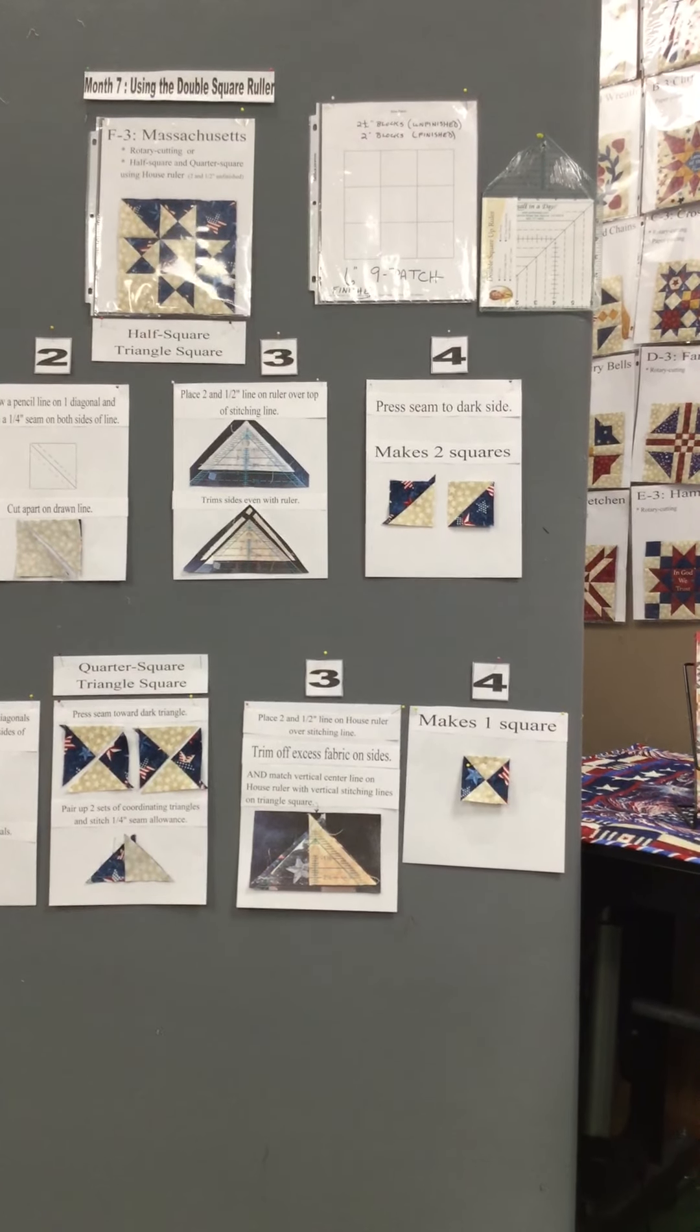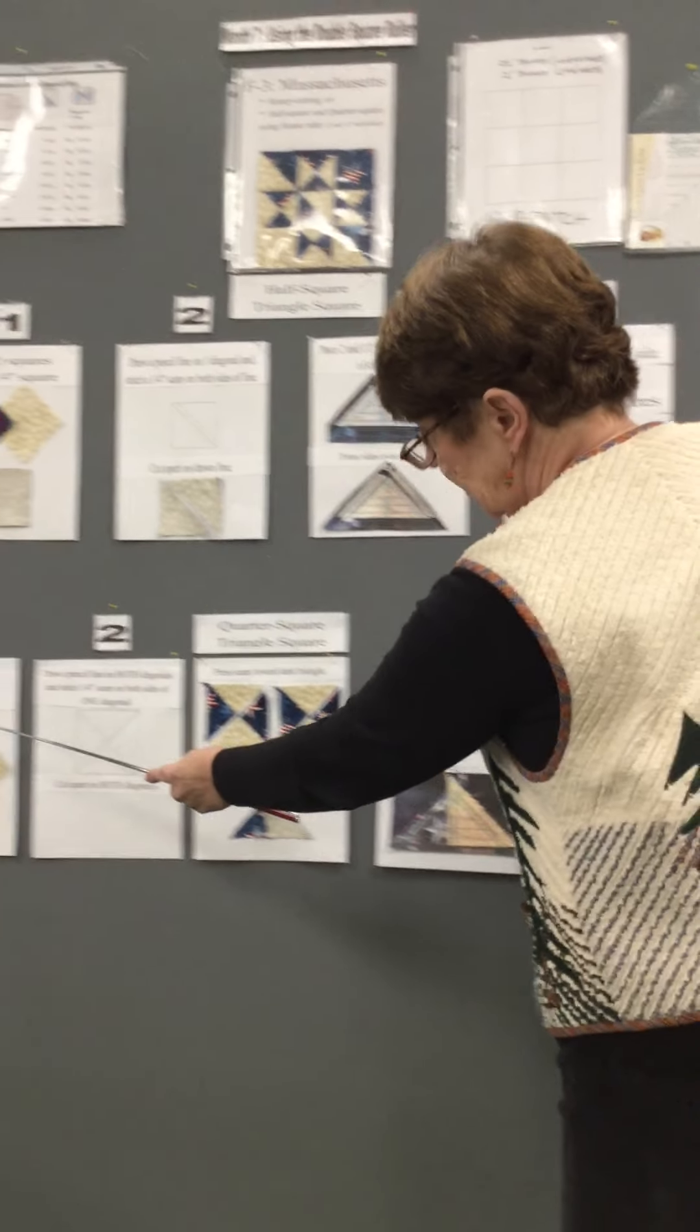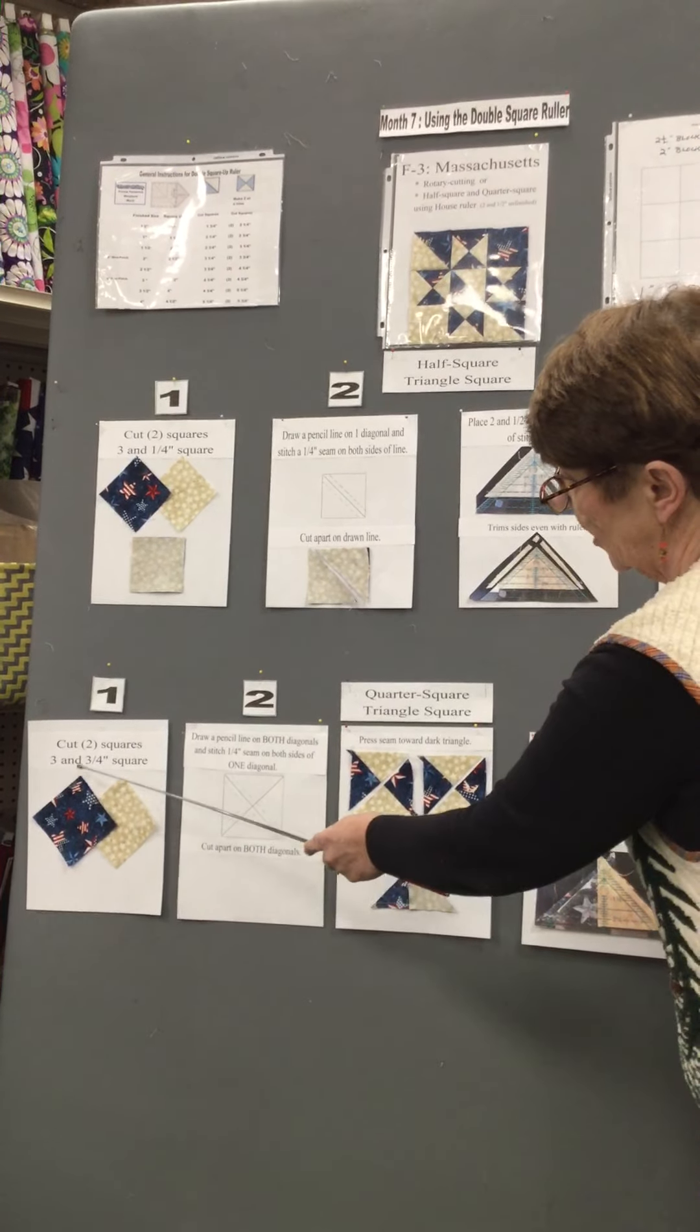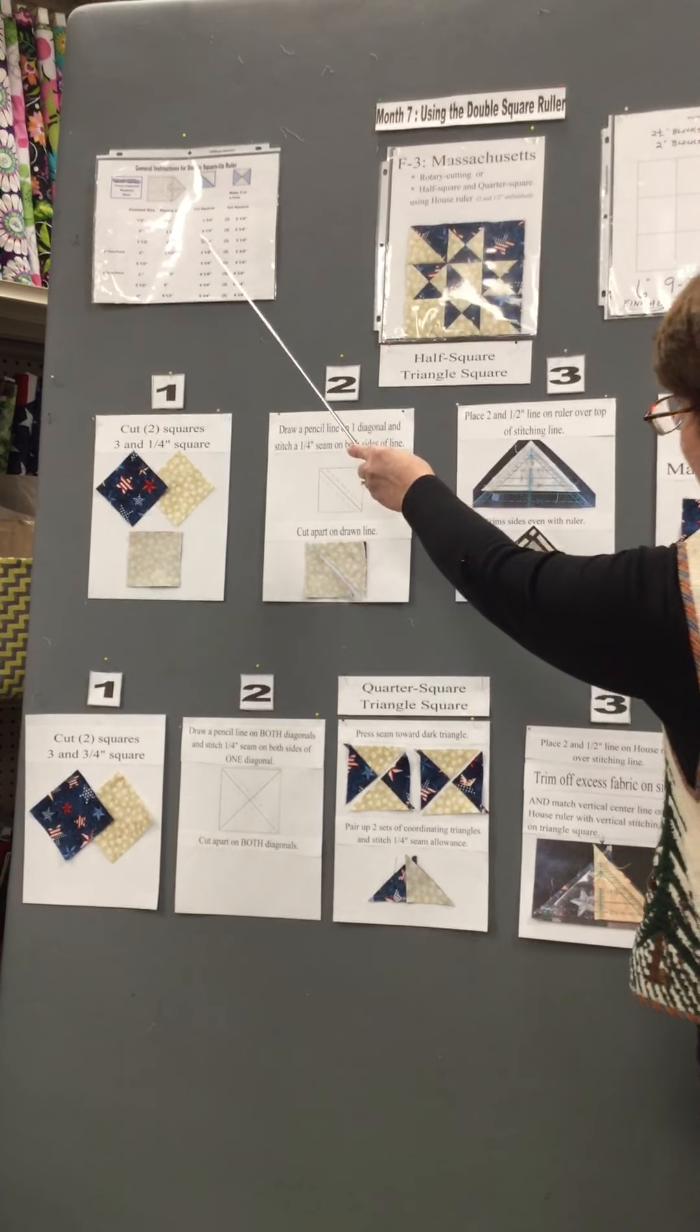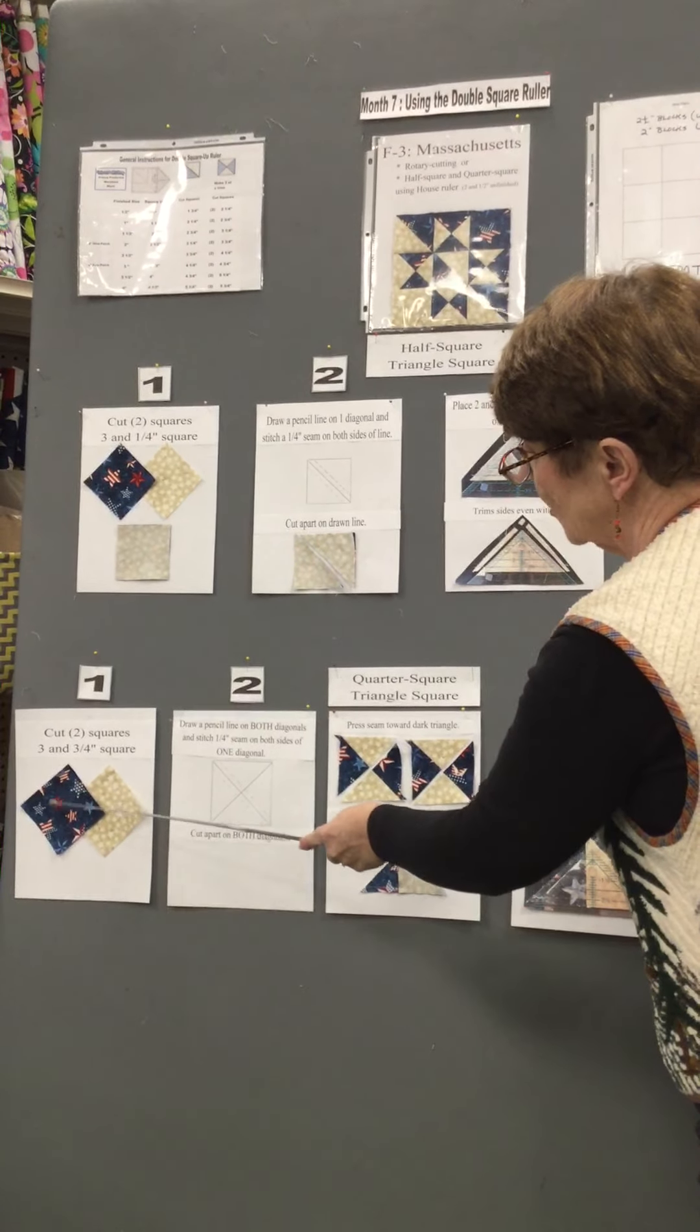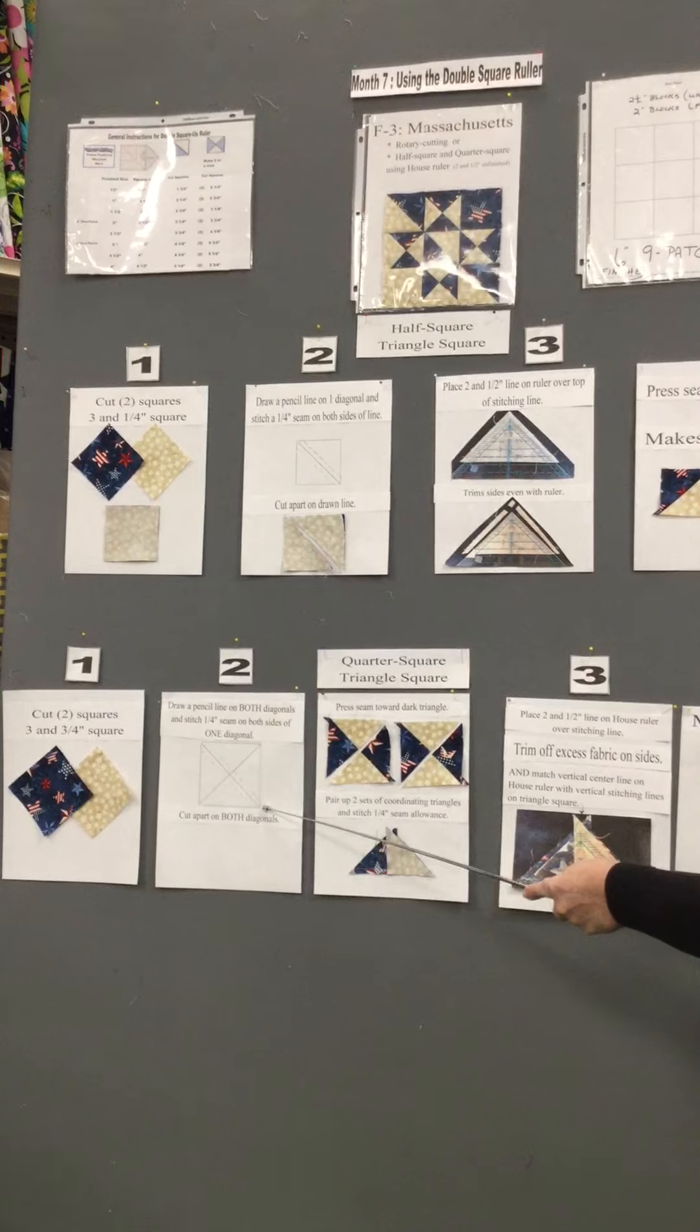Now the only difference between that and the quarter square is we have twice as many triangles, but this time we're going to cut even just a little bit larger because we're going to be cutting in two directions. So we're going to use a three and three quarter inch square, and again, this math here comes from a chart that I gave you earlier in the semester so you can just look that up.